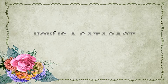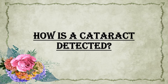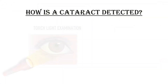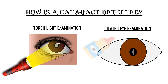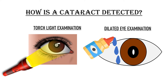How is a cataract detected? Most cataracts can be detected easily on torch-light examination. But for complete evaluation, your doctor will perform a dilated eye examination, in which drops are put in your eyes to expand the pupil. This helps the doctor perform a thorough assessment of your eye condition. The entire process usually takes about 30 to 45 minutes.